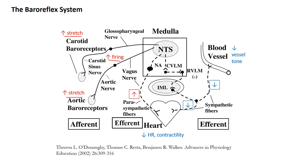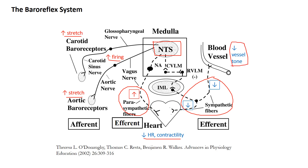That signal makes its way to a part of the brainstem called the nucleus tractus solitarius, or NTS, which responds to that input by increasing parasympathetic tone, which has the effect of lowering heart rate and contractility. That increase in firing also has the effect of reducing sympathetic firing to blood vessels and the heart, which relaxes the blood vessels and also reduces heart rate and contractility. So an increase in arterial pressure increases stretch at the arterial afferent sensors, causing a depression in vessel tone, heart rate, and contractility — and there's that negative feedback system.